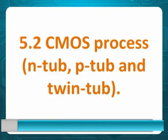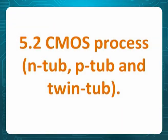Shall we start? CMOS process: N-tub, P-tub, and twin-tub. CMOS means complementary MOS because both N-MOS and P-MOS are present — that's why it is called complementary. N-MOS is called N-tub, P-MOS is called P-tub, and since CMOS contains both, it is called twin-tub.